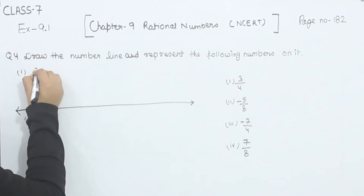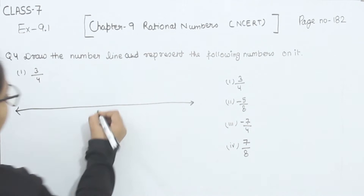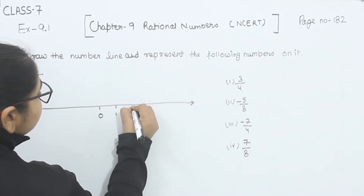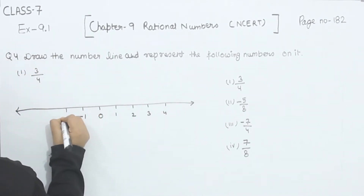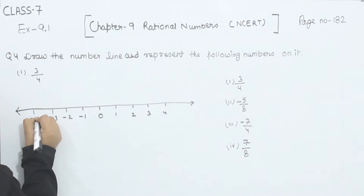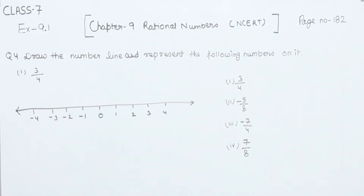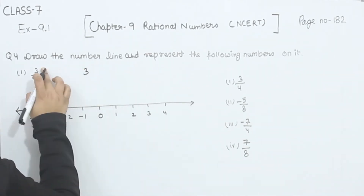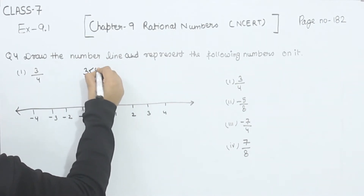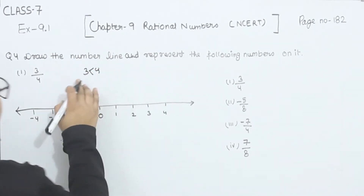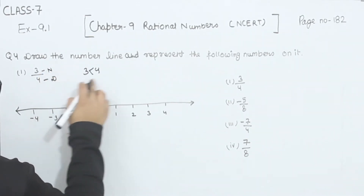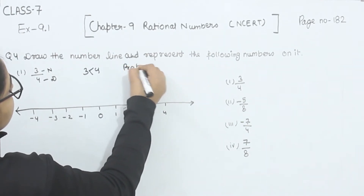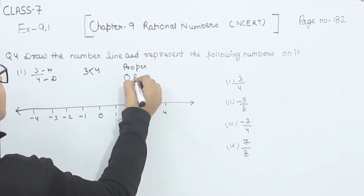Start with the first one. We are having 3 by 4. The number line goes 0, 1, 2, 3, 4 and on this side minus 1, minus 2, minus 3 and minus 4. Now I have to represent 3 by 4. The numerator is smaller than the denominator — 4 is greater than 3 — so this is a proper fraction. A proper fraction lies between 0 and 1.